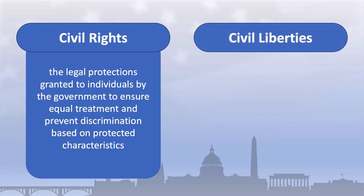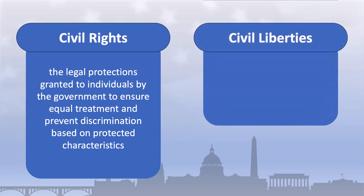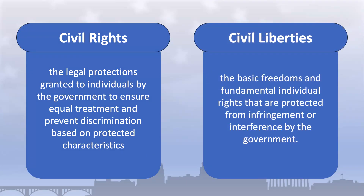Civil liberties, by contrast, are the basic freedoms and fundamental individual rights that are protected from infringement or interference by the government. They are inherent to individuals and cannot be unjustifiably taken away. In the United States, these include a number of constitutionally protected freedoms such as the right to free speech, the right to bear arms, and the various criminal due process protections.